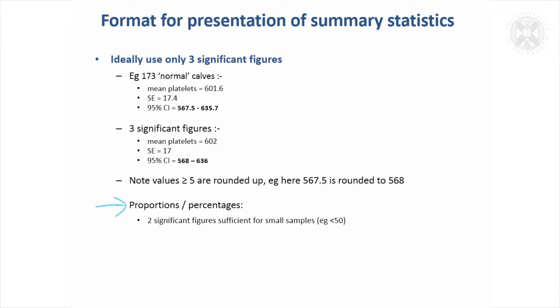And for proportions and percentages, I think the convention is to give two significant figures for small samples because there's no more information in the data. If you've got a sample of less than 50, there's no point in calculating your proportion and saying it's 28.37 because with only 50 values, that 37 is not going to be accurate. So just give it to two significant figures.